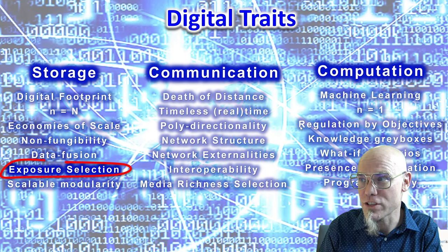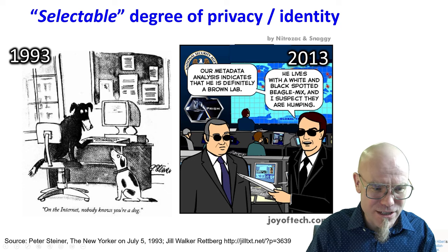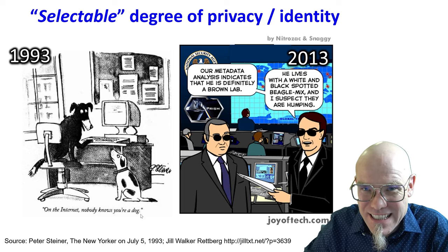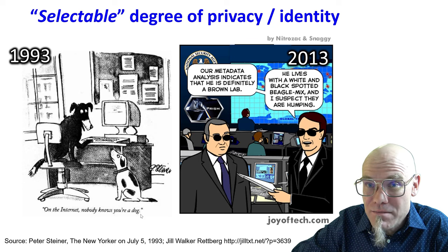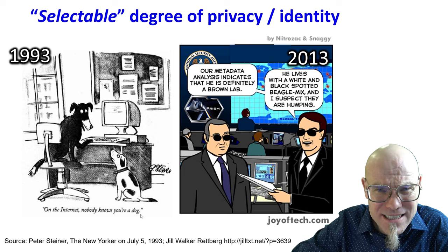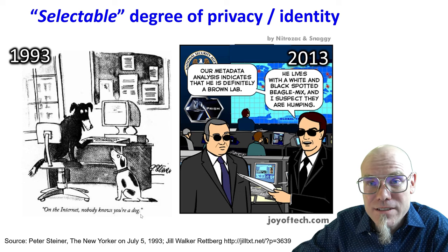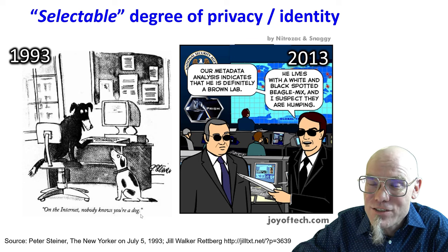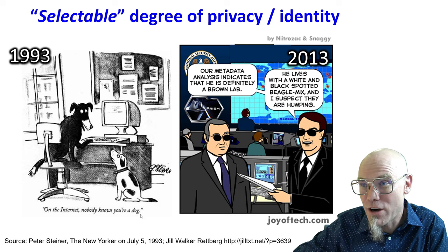When the internet and the World Wide Web first came around, there was a famous cartoon: one dog says to another, 'On the internet, nobody knows you're a dog.' Back then you could hide. The killer app that motivated many people to go online for the first time was pornography — you could consume it without anyone knowing who you were. But some 20 years later, in 2013, the Edward Snowden revelations opened people's eyes to how much is actually known about you online. What first seemed like a veil of anonymity turned out to know more about you than you'd ever thought.